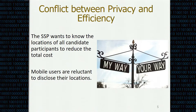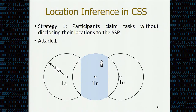Clearly, there is a conflict between privacy and efficiency. The SSP wants to know the locations of all candidate participants to reduce total cost, so it can assign participants to the nearest locations to perform sensing tasks. However, mobile users are reluctant to disclose their locations. We illustrate several potential location privacy issues. To protect user locations, no exact locations can be known by the SSP. We consider two strategies from the participant's point of view, but unfortunately these two strategies fail to protect user location privacy.